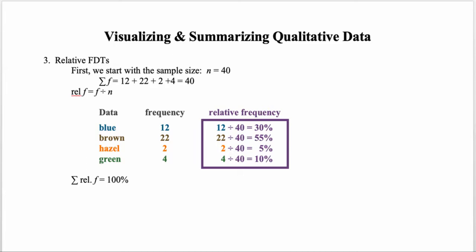That same process is repeated for all frequencies in the FDT. The frequencies add up to the sample size, and the relative frequencies add up to 100%. Sometimes, if a table has been reported as a relative frequency distribution table, the percentages may not add perfectly to 100%, but within rounding they should be very close.